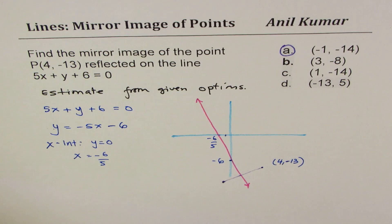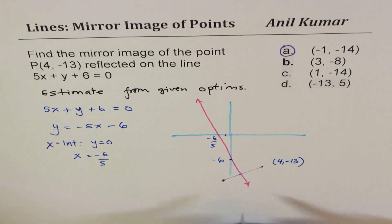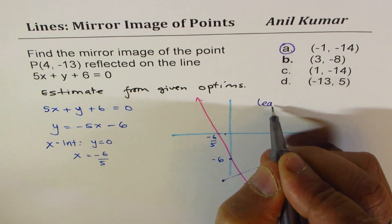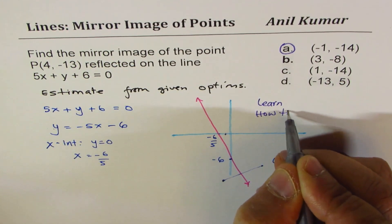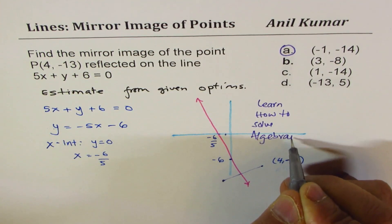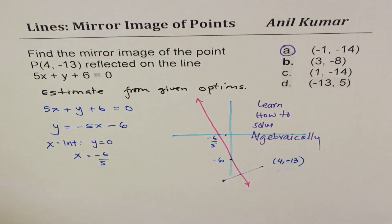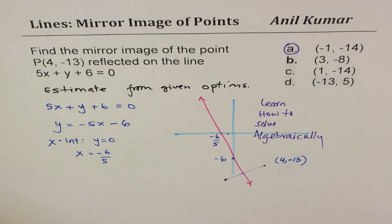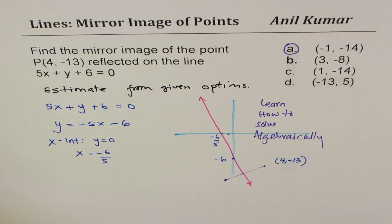So this is the last video of this series, where we conclude with an estimate. In the next series, we will learn how to solve such questions algebraically. I hope this helps you get the basics — how to find the mirror image of a point when reflected along lines parallel to the x and y axes, or along the origin. Feel free to share your comments and views. If you like and subscribe, that'd be great. Thank you and all the best.